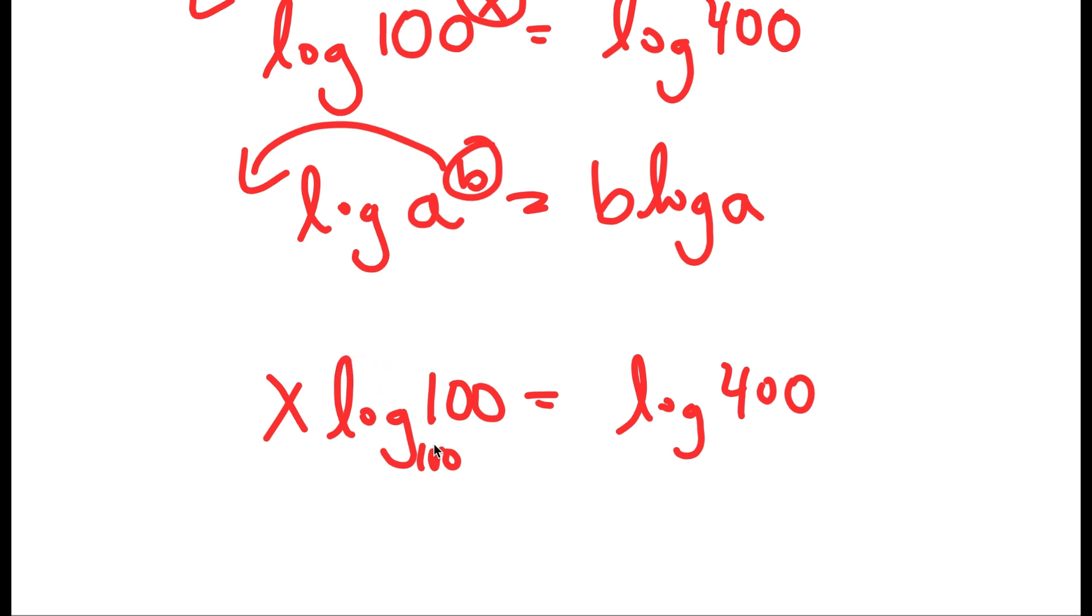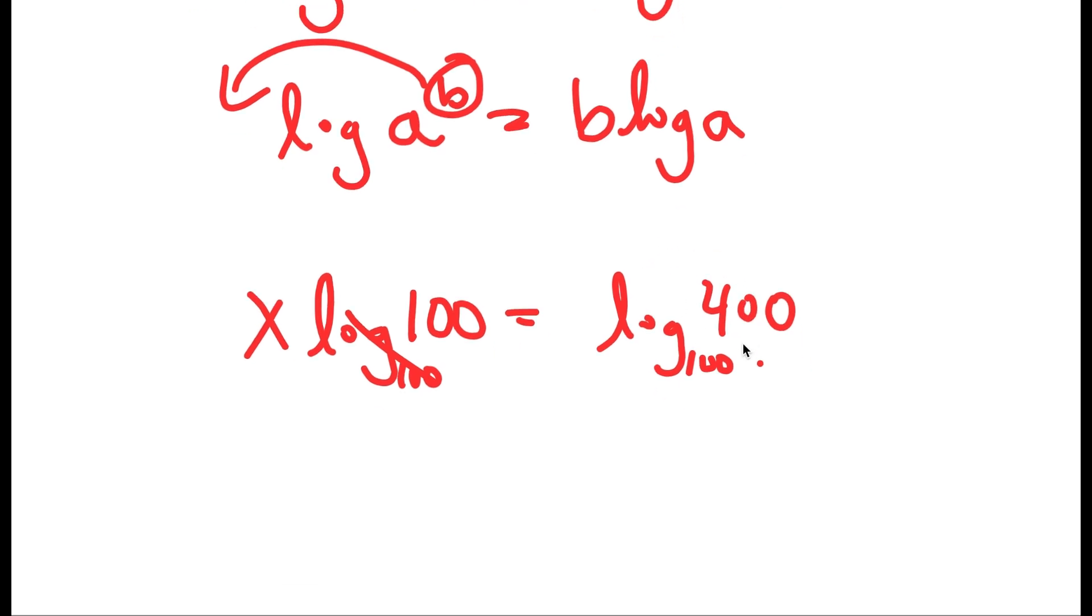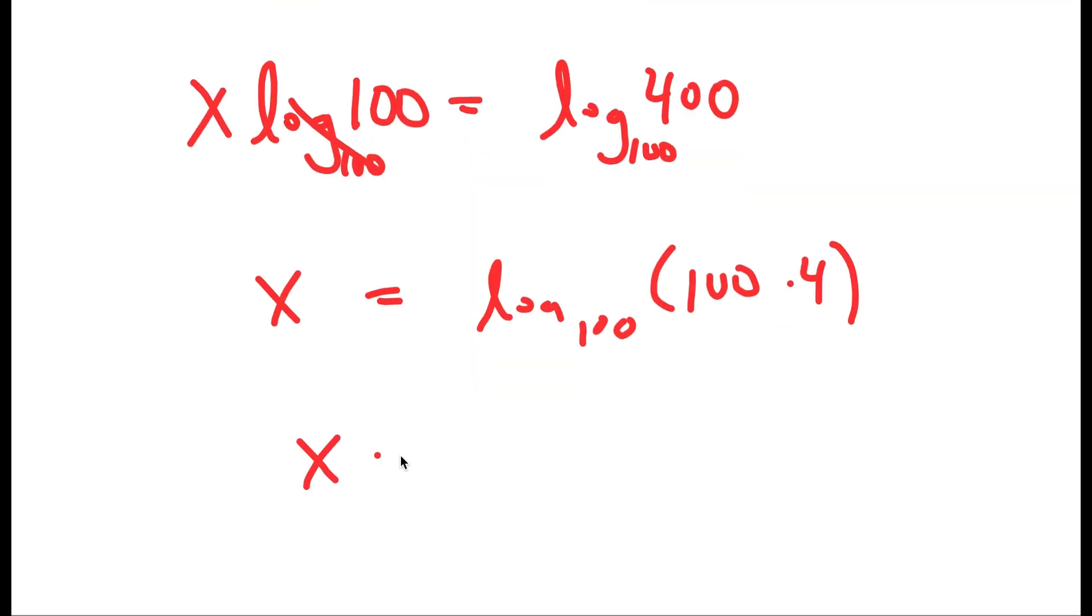Log base 100 of 100 is just 1, and log base 100 of 400. Well, 400 is the same thing as 100 times 4, so I can rewrite this as log base 100 of 100 times 4, which is equal to